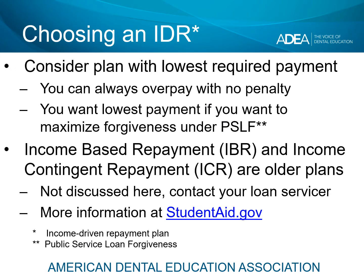When choosing an income-driven repayment plan, or IDR, while we're not trying to encourage you to always make the lowest possible payment, we would suggest that if you are going to use an IDR, you consider the one with the lowest required payment. That's why we are going to look at PAY and REPAY. You can always overpay with no penalty, so getting into a plan with the lowest required payment certainly helps your cash flow.